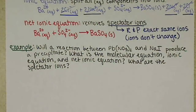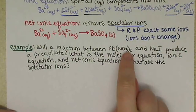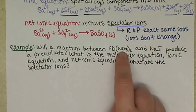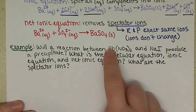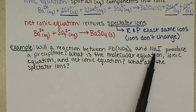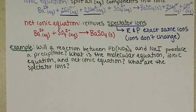Will a reaction between lead(II) nitrate and sodium iodide produce a precipitate? In lead(II) nitrate, the 2 is the charge on lead — nitrate has a negative-1 charge, and there are 2 nitrates per 1 lead, so lead has a plus-2 charge. We want to know the molecular equation, ionic equation, net ionic equation, and spectator ions. Give this a try on your own, pause the video, and try to follow our example above.